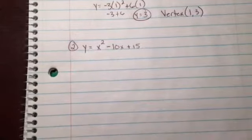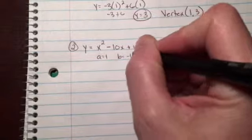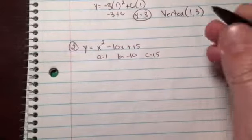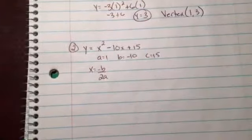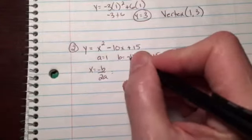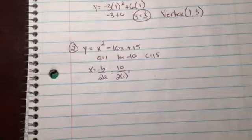Problem 2: a = 1, b = -10, and c = 15. Opposite of b over 2a - opposite of that is positive 10, 2 times a is 2. That equals 5.